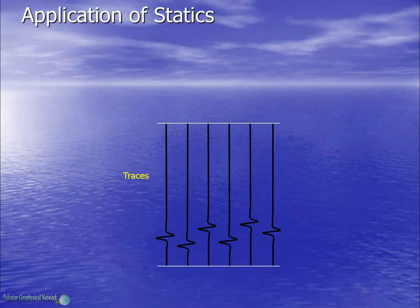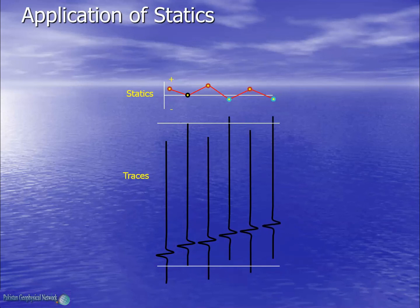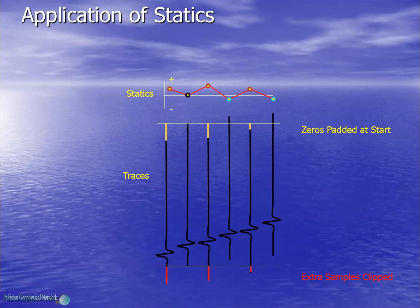Now we will see how the statics are applied to the seismic data. The computed statics are stored in the trace headers and these time shifts are applied to the traces whenever required. In this case we have a bunch of traces and the statics are displayed at the top. The first trace has positive statics thus a time shift is added. On the second trace we have zero statics thus no shift is applied. Similarly a positive time shift is applied to the third trace. On the fourth trace the statics is negative thus the trace is pulled up. Similarly statics are applied to all the traces, and we can now clearly see a dipping reflector. For positive statics, zeros are padded at the start and extra samples are clipped from the end to maintain the same trace length. For negative time shifts, zeros are padded at the end and extra samples are clipped from the start.